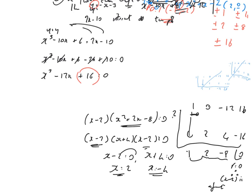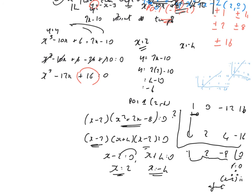To get the y-coordinates, substitute back into y equals 2x minus 10. For x equals 2: y equals 2 times 2 minus 10, which is 4 minus 10, giving minus 6. So point 1 is (2, minus 6). For x equals minus 4: y equals 2 times minus 4 minus 10, which is minus 8 minus 10, giving minus 18. So point 2 is (minus 4, minus 18).